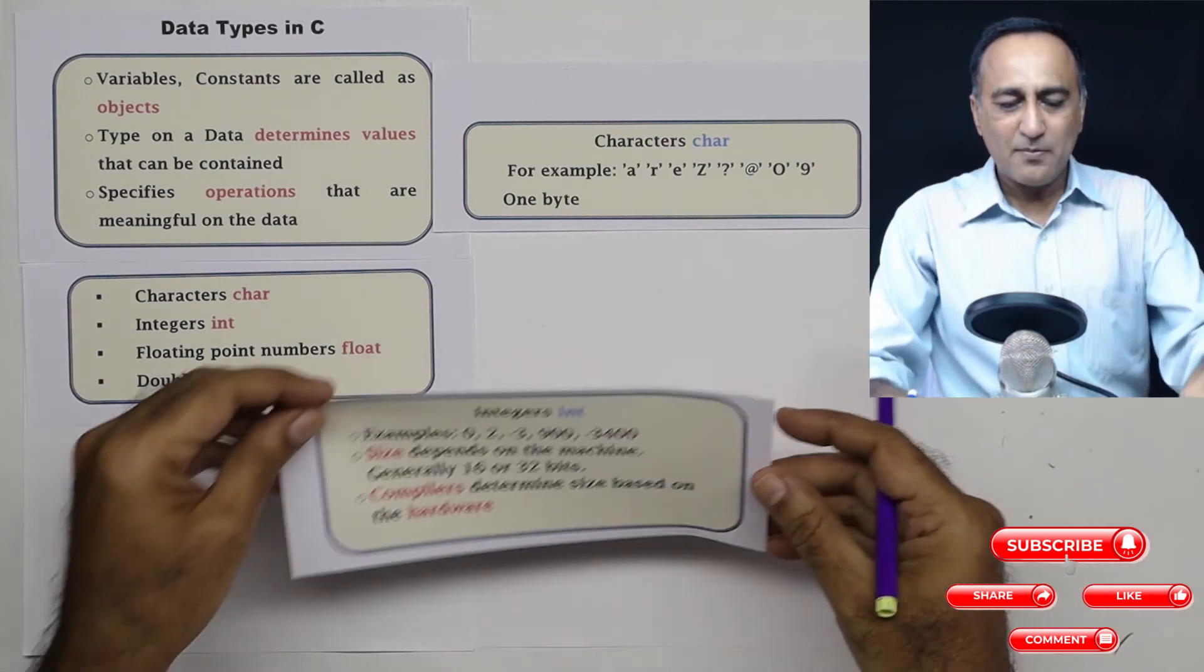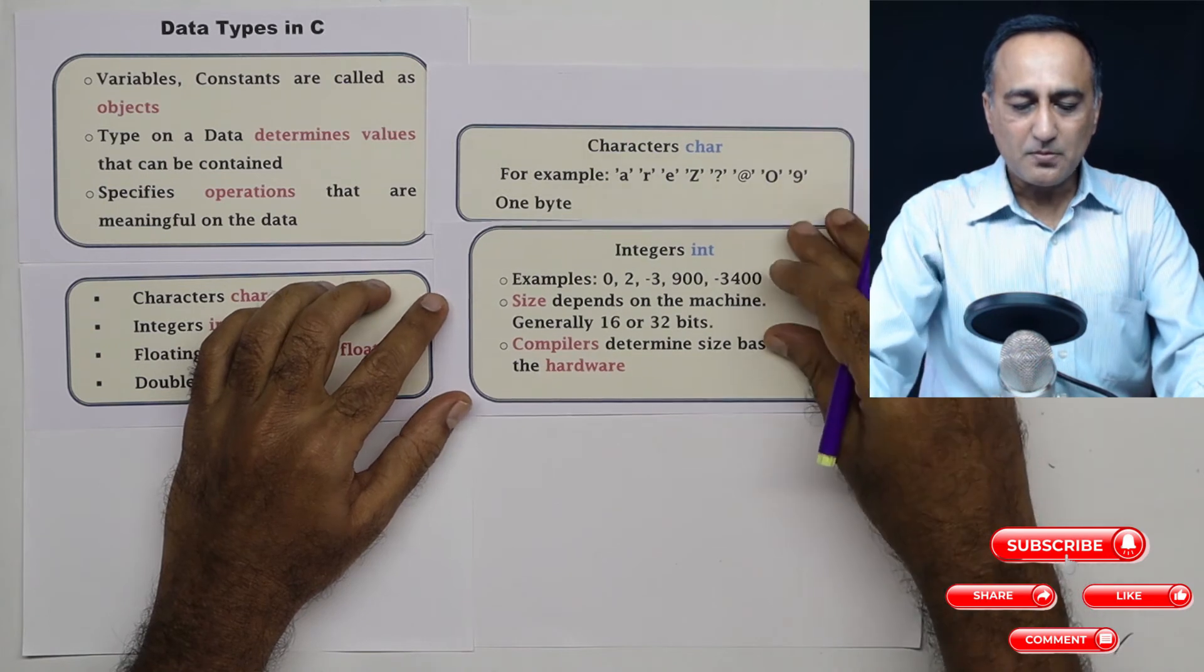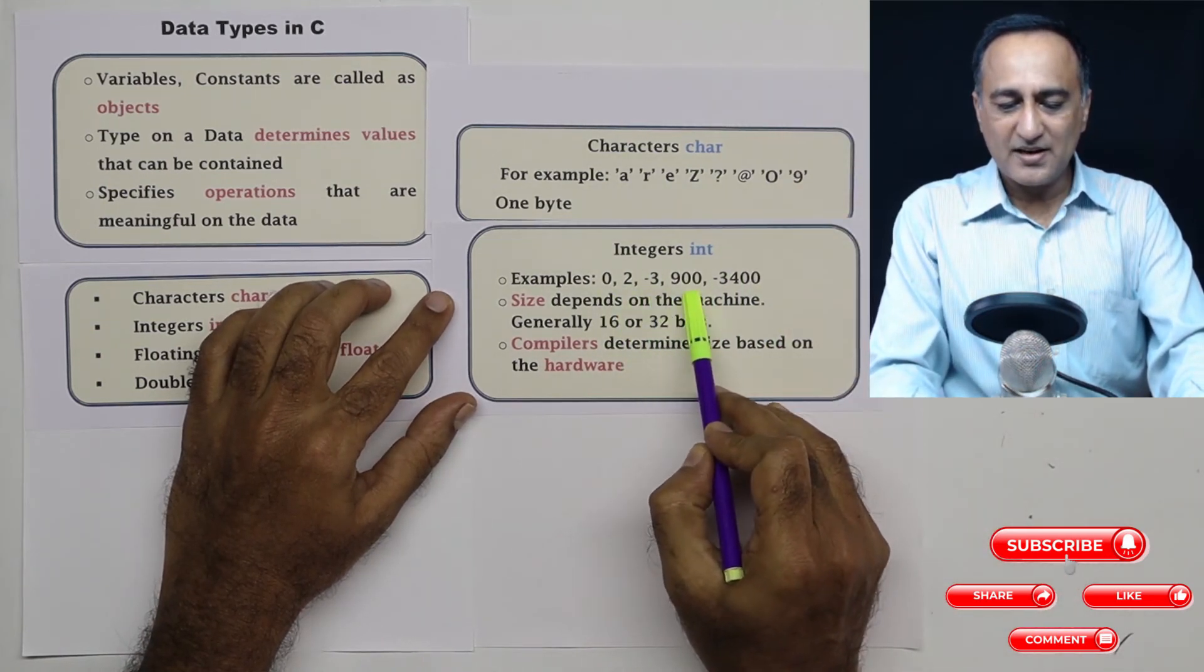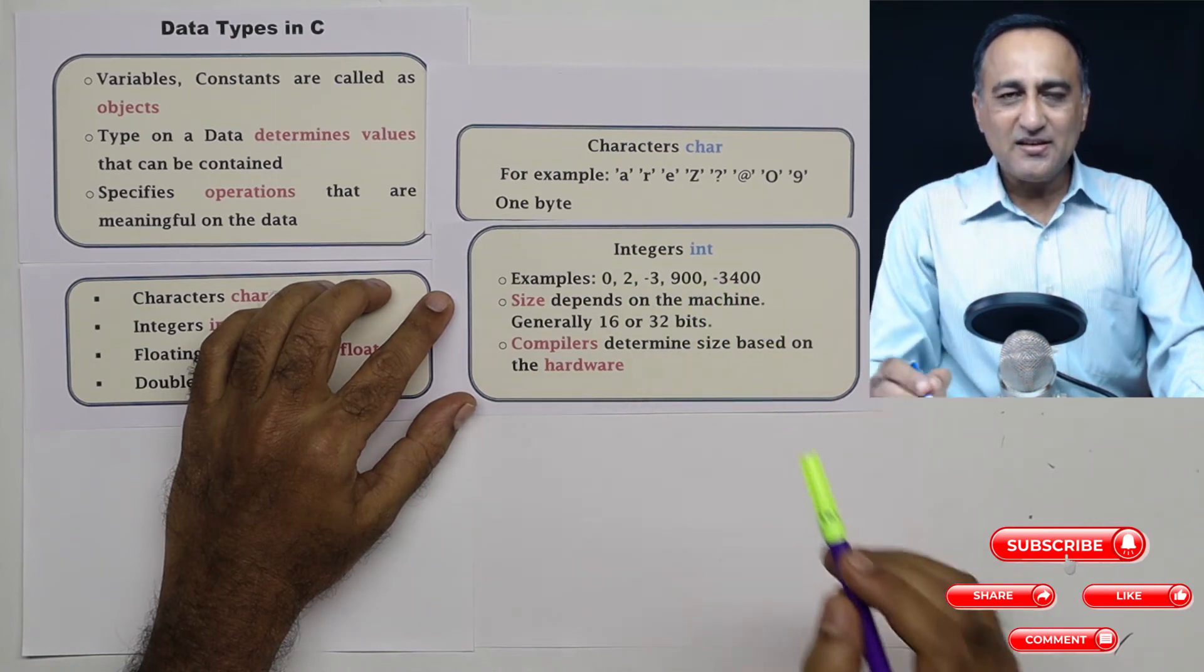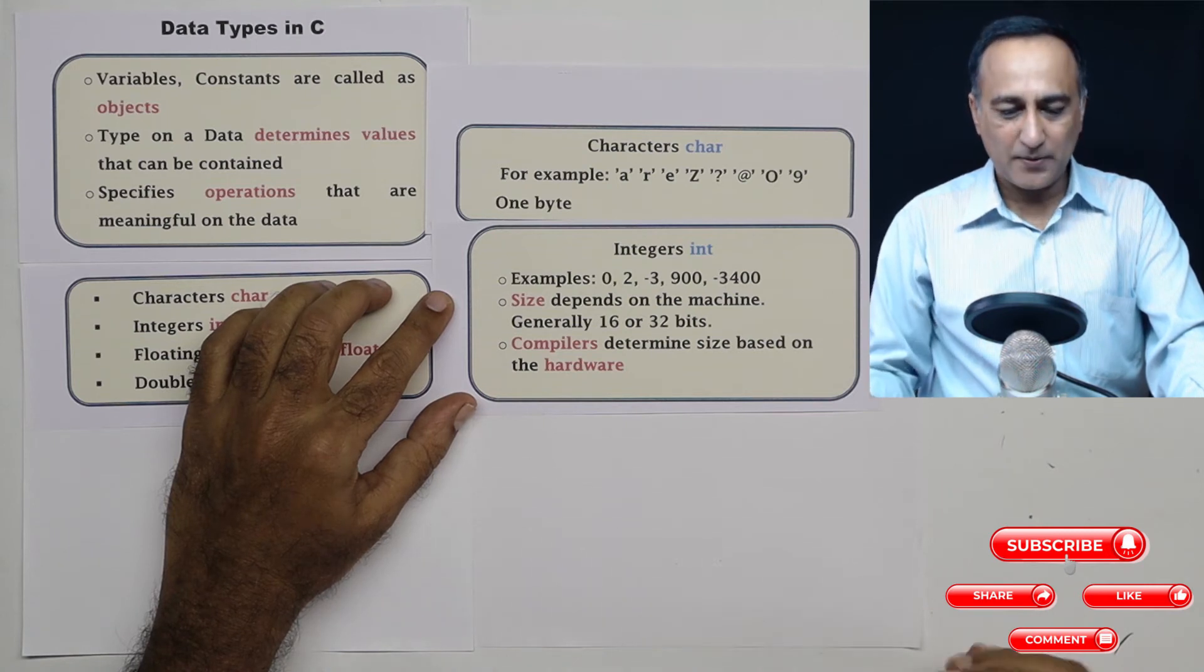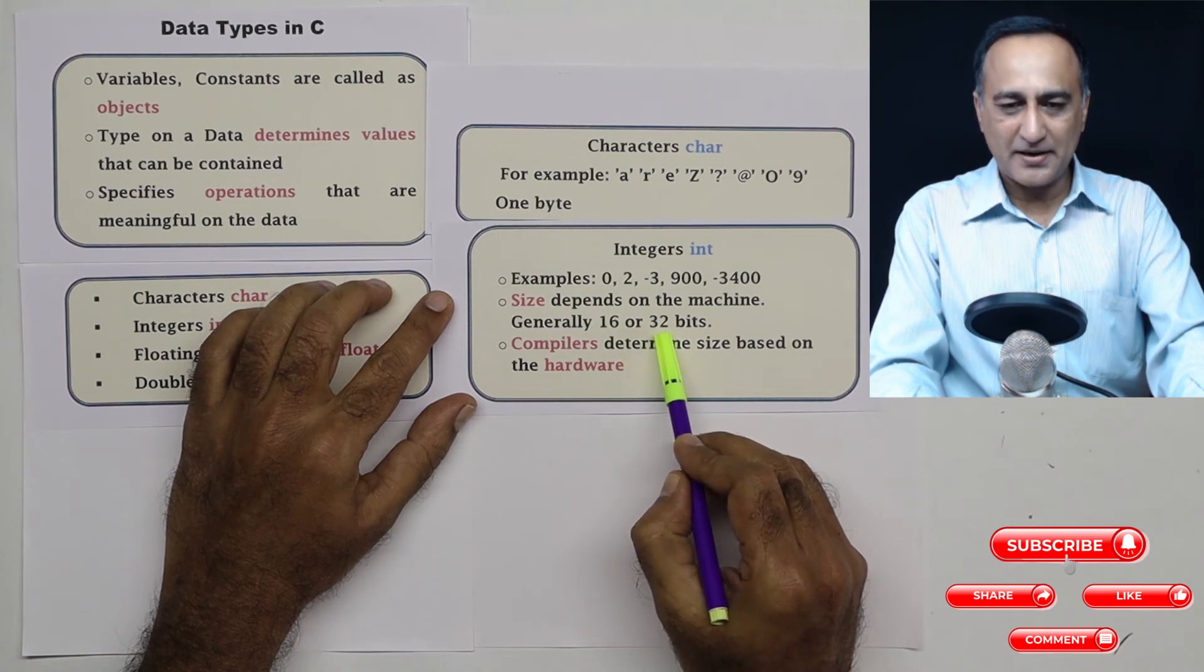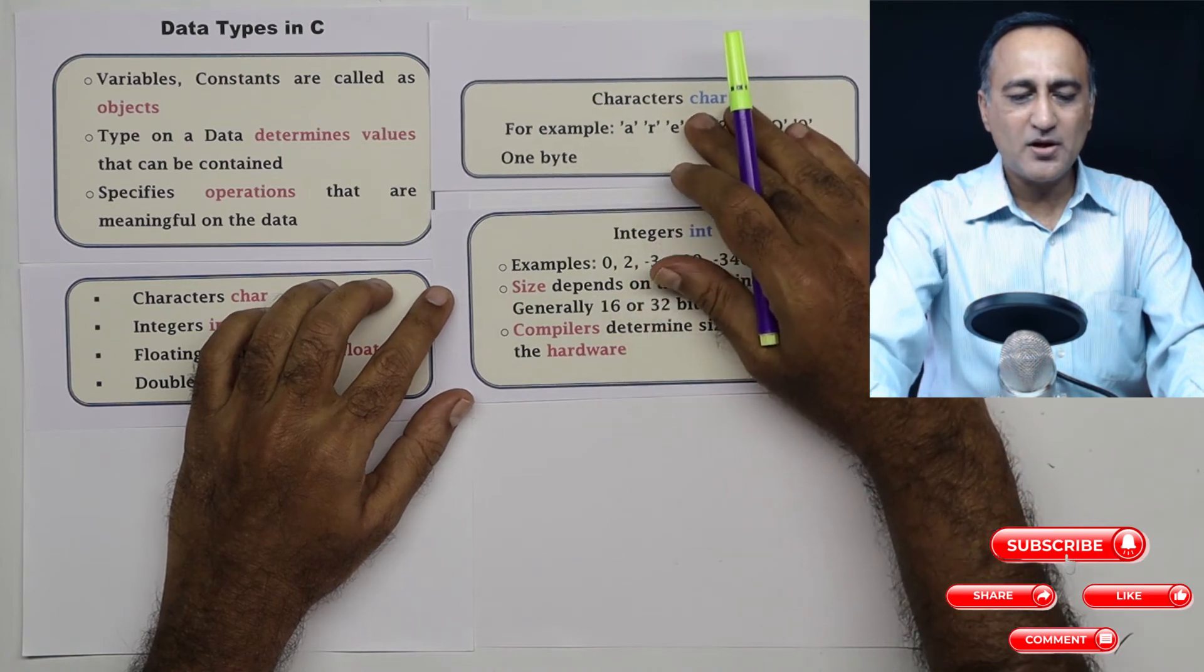The next type of data is integers. Examples are 0, 2, -3, 900, -3400, and so on. With integers, the interesting part is the size is machine dependent. The size is determined by the compiler operating on that particular hardware, but generally it's either two bytes or four bytes.